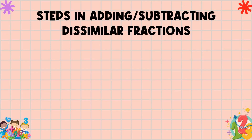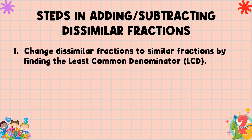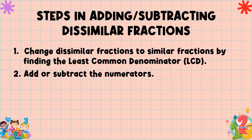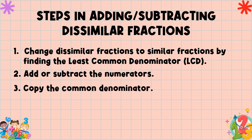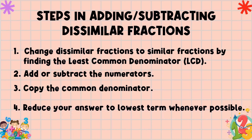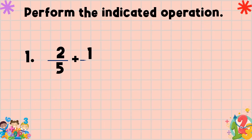These are the steps in adding or subtracting dissimilar fractions — fractions having different denominators. Number one: change dissimilar fractions to similar fractions by finding the least common denominator, or LCD. Number two: add or subtract the numerators. Number three: copy the common denominator. And lastly, reduce your answer to lowest term whenever possible.